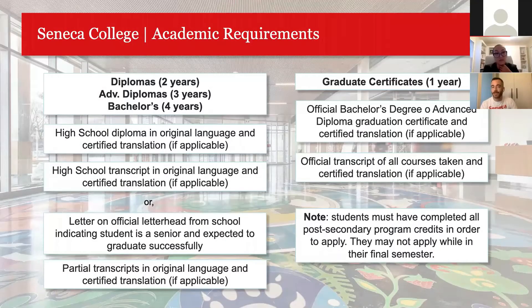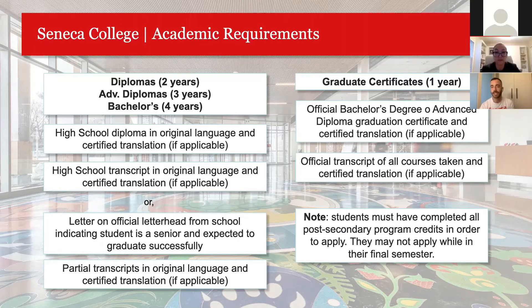In terms of requirements, all documents need to be in digital version at the time of your online application through our website. At the undergraduate level, we offer diplomas, advanced diplomas, and bachelor's degrees — two, three, and four years respectively. The minimum requirement is that you have graduated high school. We'll need your high school graduation diploma and transcripts from the last two to three years. If they're in a language other than English, they need to be translated by a certified translator.